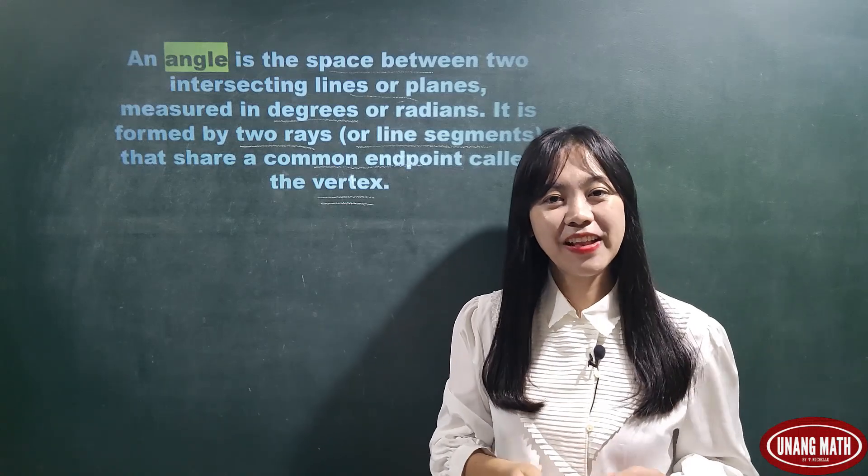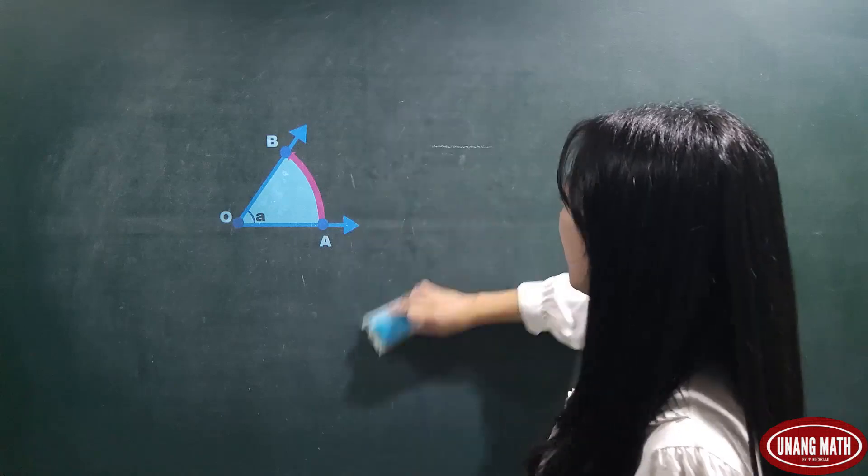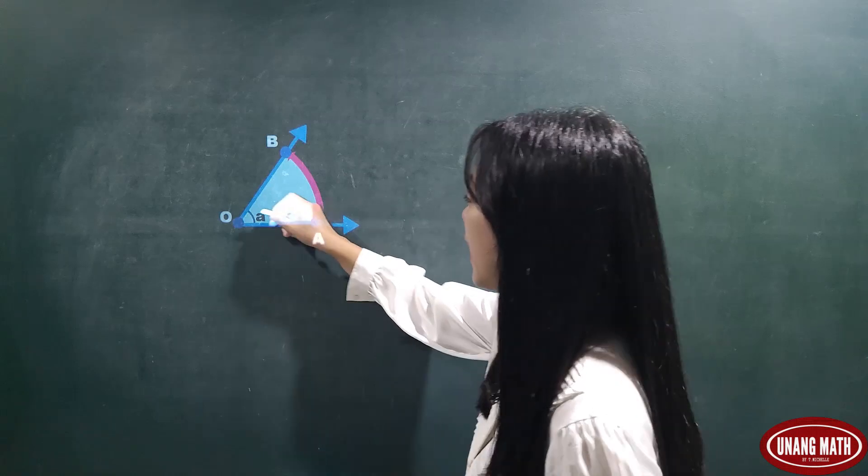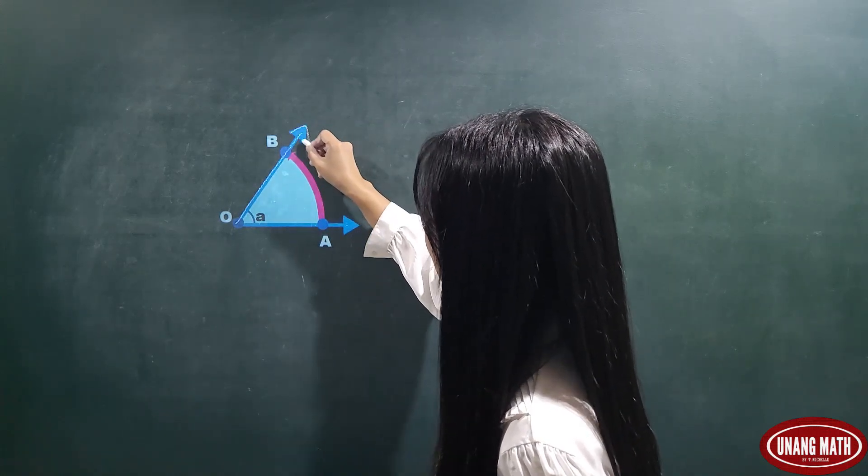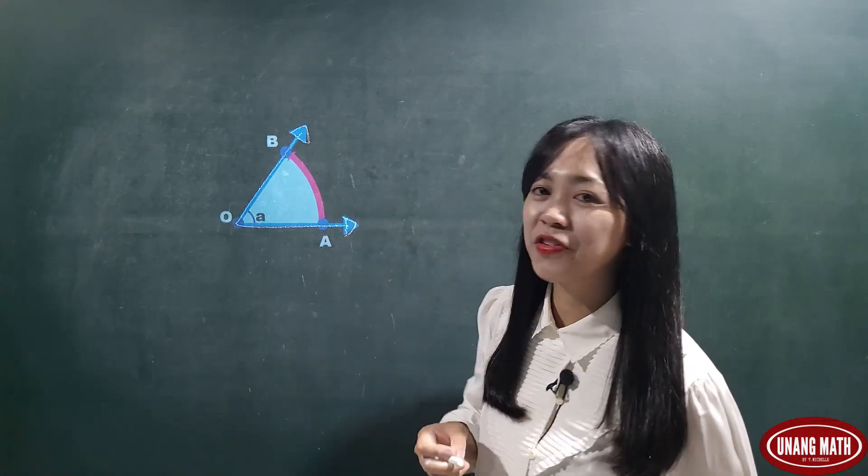Okay, for you to understand this concept, let's give an example. In this figure, you can see two lines, specifically two rays. So, this is our first ray and this is the second ray.